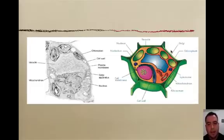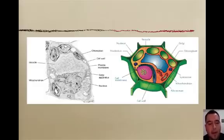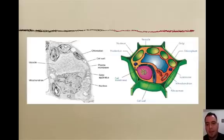Look at this cell — it has a vacuole, mitochondria, chloroplasts, a cell wall, and a nucleus, so it's definitely a eukaryote and most likely a plant cell. This one is also a plant cell — I know it's eukaryote because it has a nucleus and membrane-bound organelles.